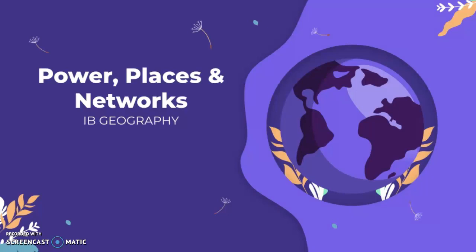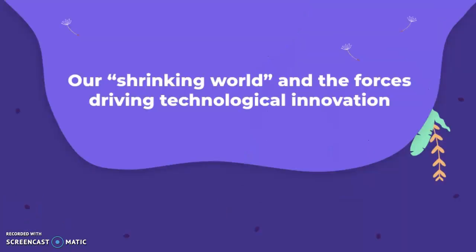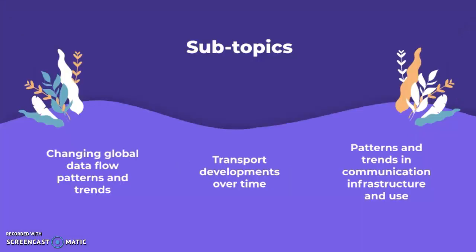This video covers IB Geography: power, places and networks — our shrinking world and the forces driving technological innovation. The subtopics are changing global data flows patterns and trends, transport developments over time, and patterns and trends in communication infrastructure and use.